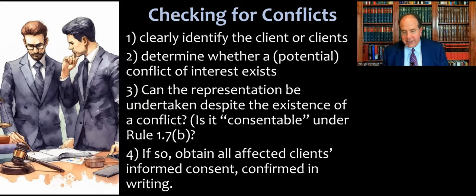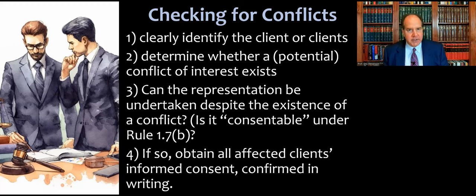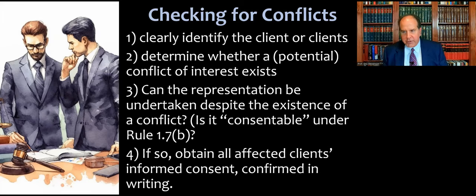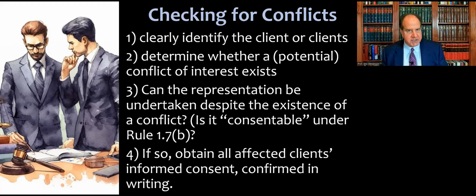When you're in law school, it sounds like this would be easy to do, but in practice this can get a little complicated, especially if you have a large corporation that owns lots of subsidiaries, or you're representing a subsidiary that has a larger umbrella organization over it or lots of affiliates. So sometimes you're going to have to spend some time really identifying who is the client, then determine whether an existing or potential conflict of interest exists. Then ask yourself whether the representation could be undertaken despite the existence of this conflict — in other words, is it consentable under 1.7(b)?